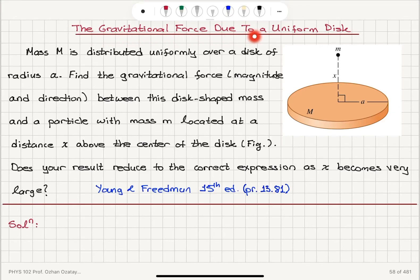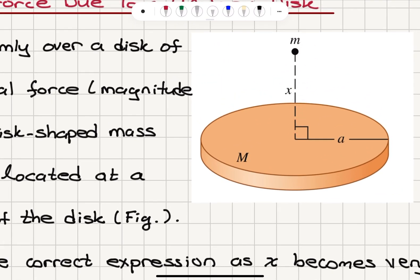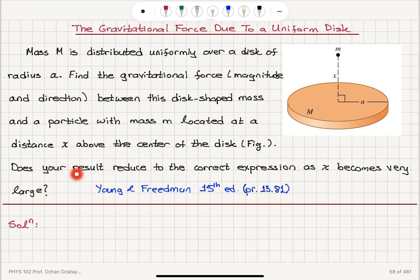The gravitational force due to a uniform disk. Mass capital M is distributed uniformly over a disk of radius A. Find the gravitational force magnitude and direction between this disk-shaped mass and a particle with mass m located at a distance x above the center of the disk. As you can see in the figure, it's on the z-axis. Does your result reduce to the correct expression as x becomes very large?